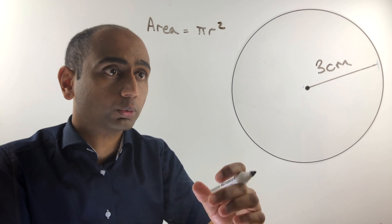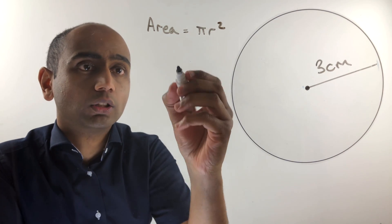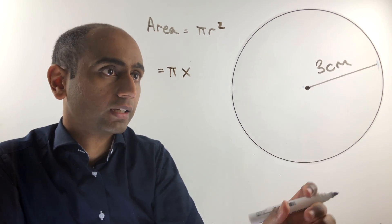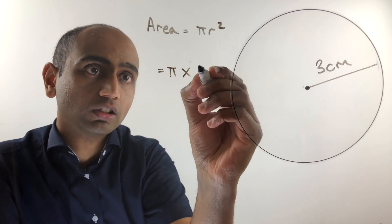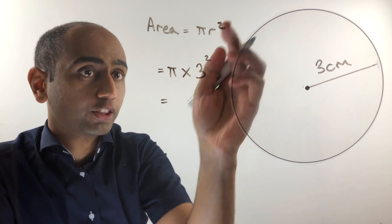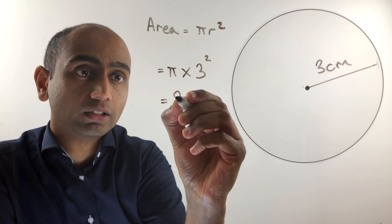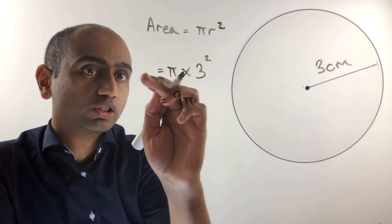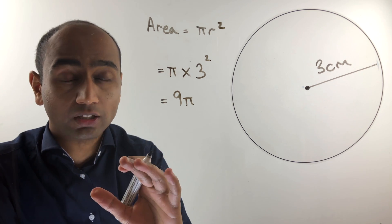Let's do the first example. We want to find the area of this circle, which is going to be pi times the radius squared. In this case the radius is 3 centimeters, so we do pi times 3 squared. 3 squared is 9, so an exact answer would be 9 pi — that's 9 lots of pi — and the units would be centimeters squared.